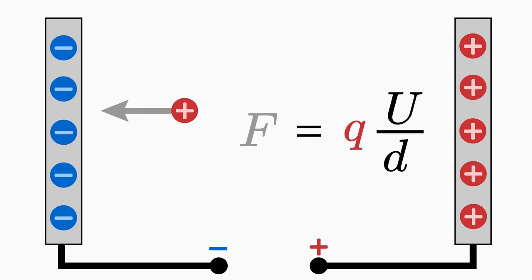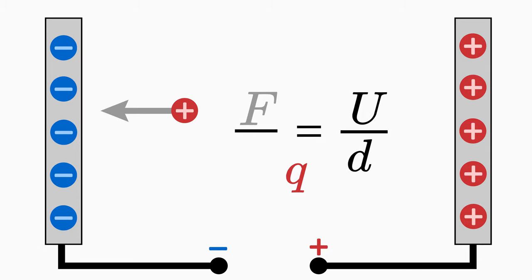If you divide the force F by the test charge q, you get the quantity electric field E. So the E field is nothing else than force per charge. The electric field E in the plate capacitor is determined by the voltage and the plate distance.